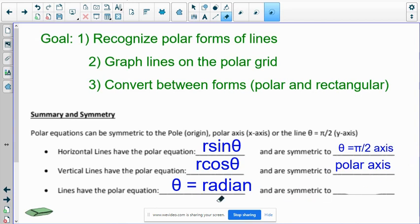Vertical lines are symmetric to the polar axis. And lines that are like theta equals a number is actually symmetric to the pole because it goes straight through the pole. Okay, so you need to know that. So that is how you convert lines. I think they're fairly straightforward.